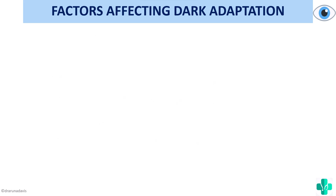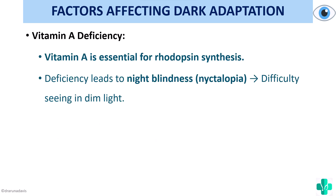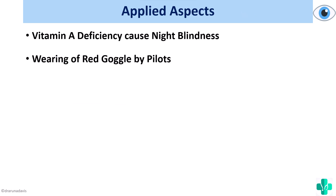Another important factor is vitamin A deficiency. Vitamin A is required for rhodopsin synthesis, so if vitamin A is deficient, rhodopsin will not be synthesized sufficiently, leading to night blindness — also called nyctalopia — and difficulty seeing in dim light. The applied aspect is that vitamin A deficiency causes night blindness because it decreases rhodopsin regeneration, resulting in defective dim light vision.